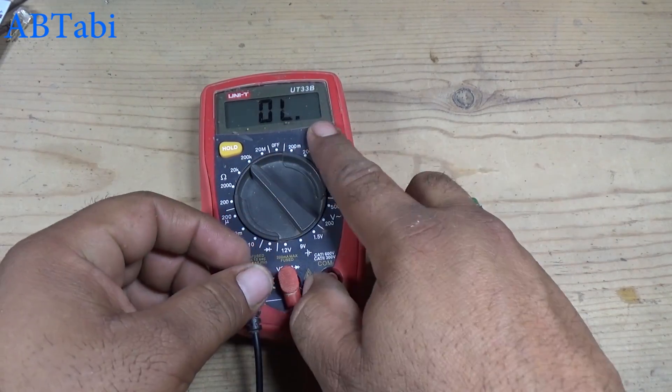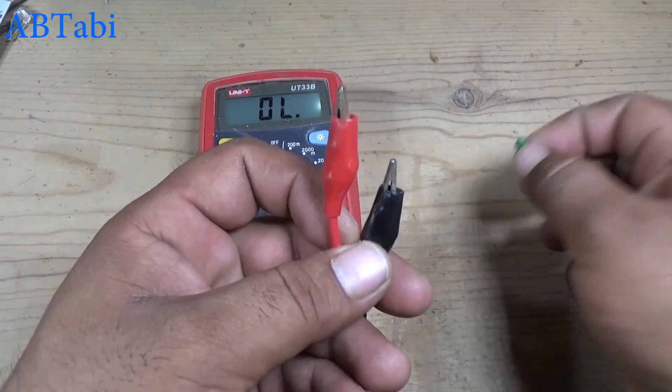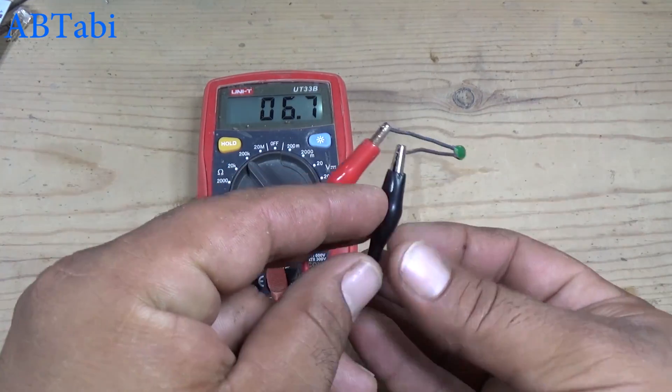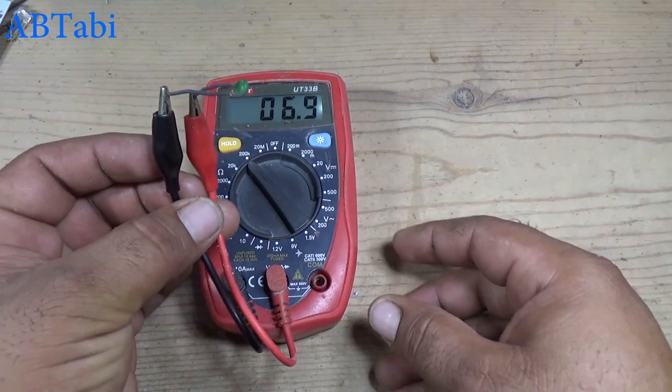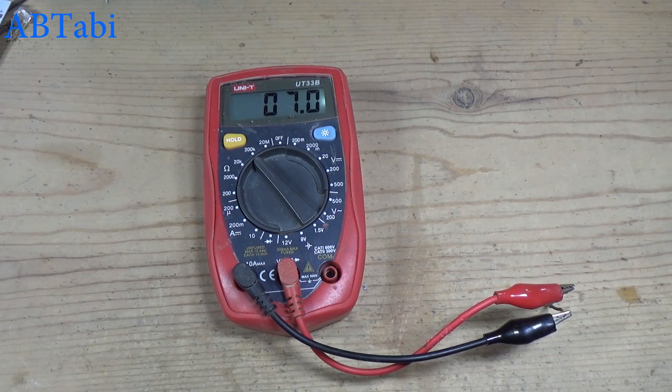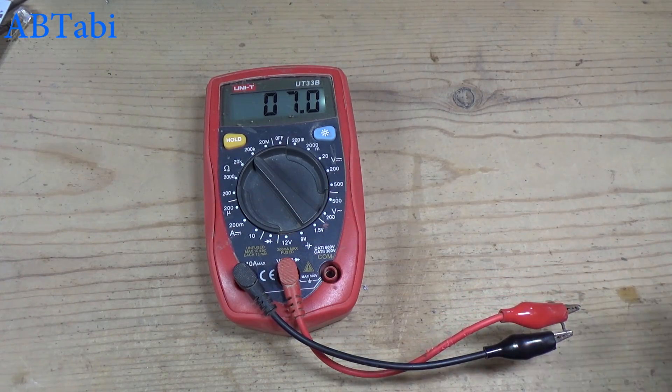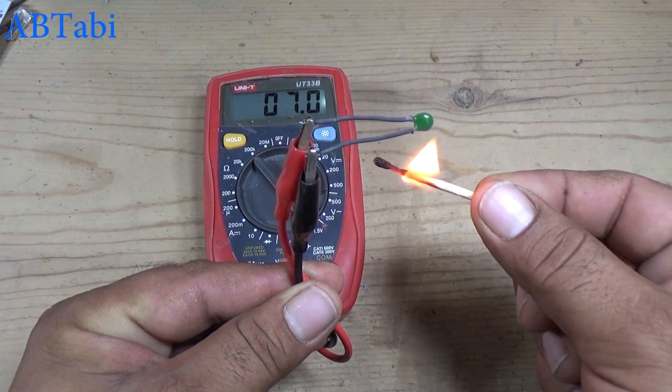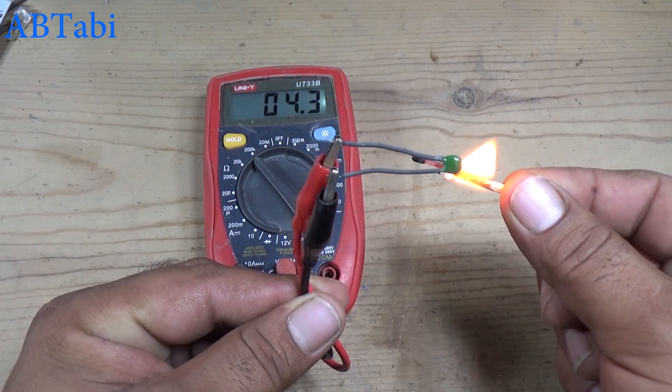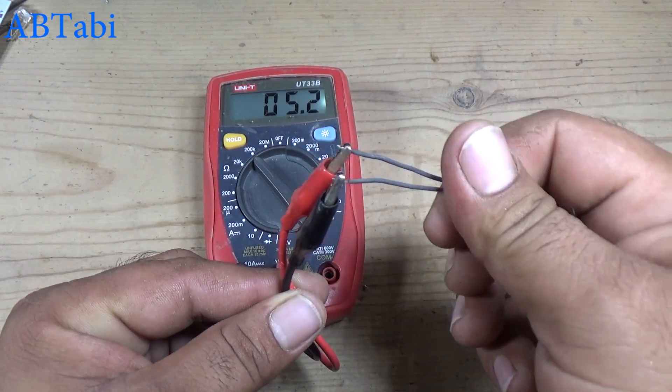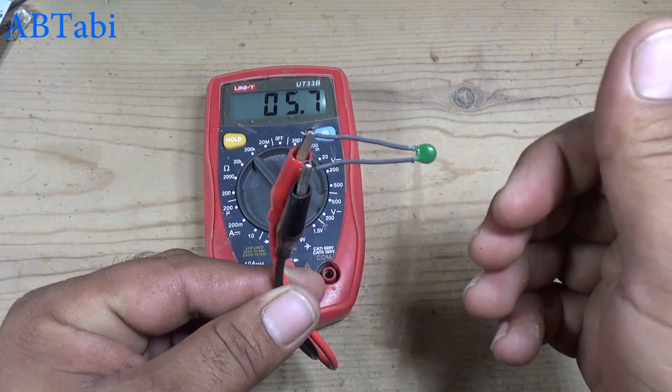First we test thermistor working. Take a multimeter. You can see multimeter screen show 6.9K resistor. My room temperature is near about 36 degrees celsius, so the 10K thermistor shows near about 7K resistor. When we up the temperature, resistor value got down. Again temperature down the thermistor, resistor value got up.